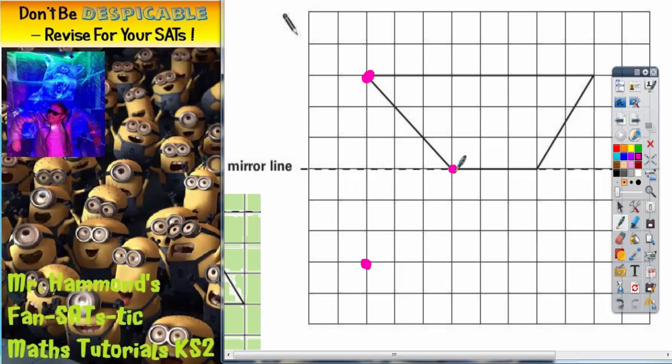This corner is already on the mirror line so it's no squares to the mirror line, zero distance so that corner when it's reflected stays where it is. This corner is also on the mirror line so when it's reflected that will stay where it is.